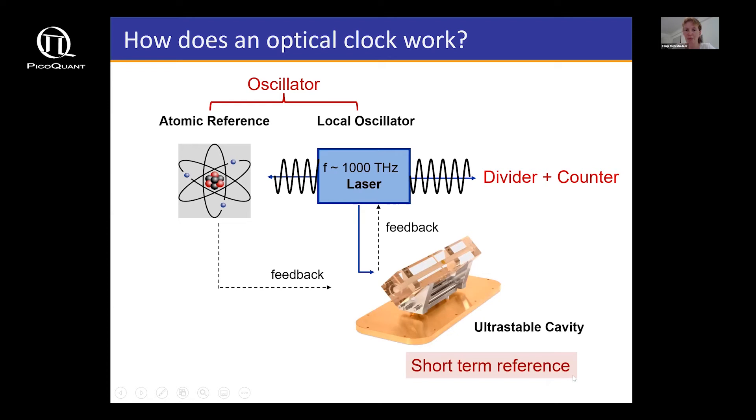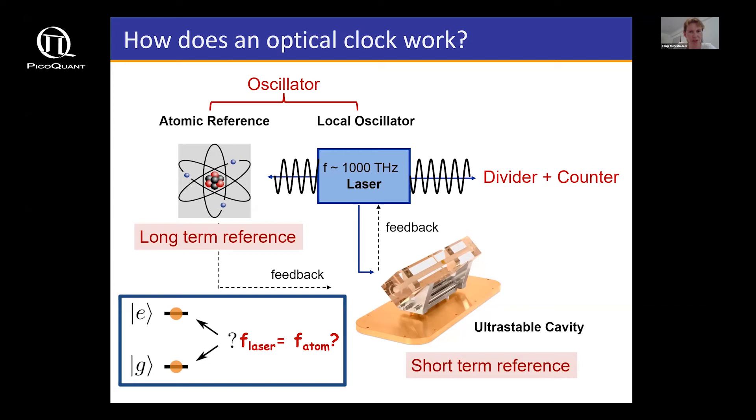The first step, we stabilize the laser on something we call an ultra-stable cavity. That gives us a short-term reference to make the laser stable. Then when the laser is stable on a short term, we lock it onto the atomic reference, which is the long-term reference. The laser is stabilized on the atom, and the atom only obeys the laws of nature, the natural constants. I can be sure if I lock my laser to an atom, I will get the same frequency here in Braunschweig and in Tokyo, in London, in the United States, everywhere I'm building such a clock and locking it to the same atom. My laser will have the same frequency.